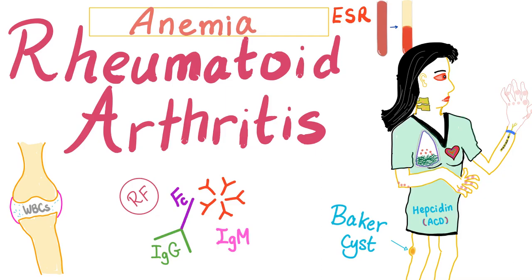Hey guys, it's Medicosis Perfectionelis, continuing our Rheumatology playlist of videos. In the previous video, we talked about the extra-articular manifestations of Rheumatoid Arthritis, and I promised to make a whole video about Anemia and Rheumatoid Arthritis. This is gonna be super cool. Here is my imaginary friend Rose — she has Rheumatoid.